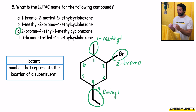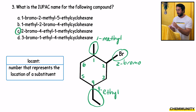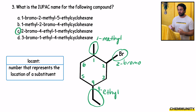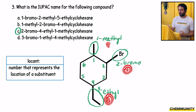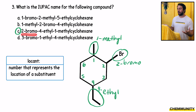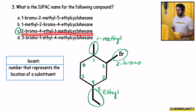That's what determines which carbons the substituents are on, and then we list the substituents in alphabetical order: B for bromo, then E for ethyl, then M for methyl — 2-bromo-4-ethyl-1-methylcyclohexane.